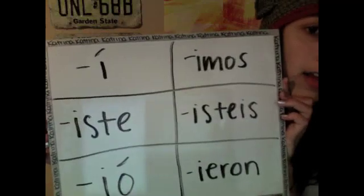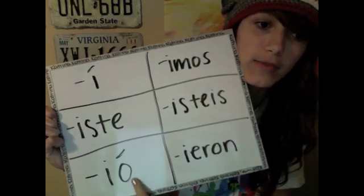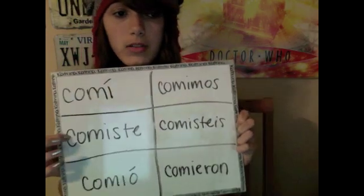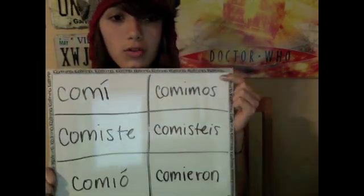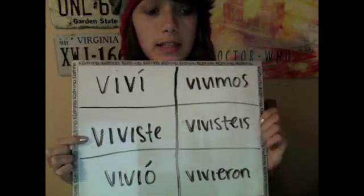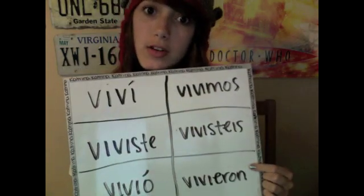This is the conjugation chart for an ER or IR verb. The accents are necessary — don't forget to put it on the O and not the I, because you're emphasizing the O. For 'comer': yo comí, tú comiste, él comió, nosotros comimos, vosotros comisteis, ustedes comieron. For an IR verb like 'vivir': yo viví, tú viviste, él vivió, nosotros vivimos, vosotros vivisteis, ustedes vivieron.